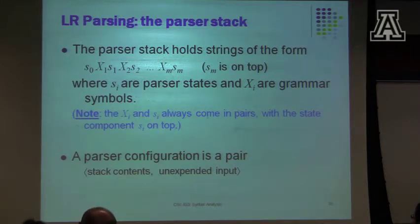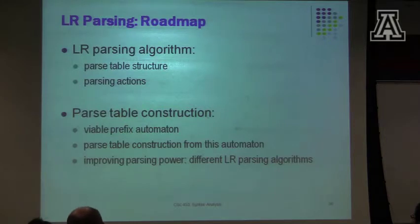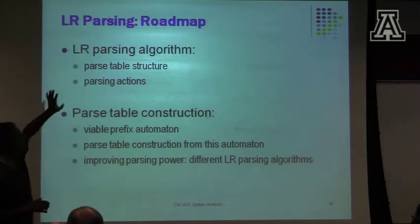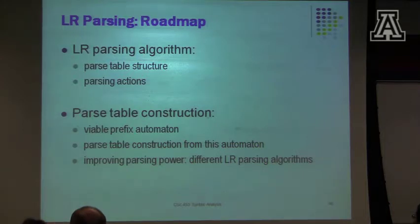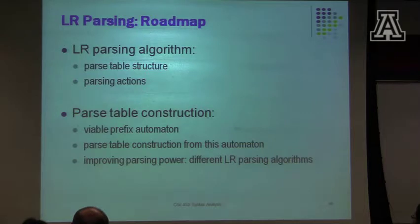The parser configuration consists of what's on the stack and what's in the input. The parse table has two parts: an action table and a go-to table. Each step begins with a consult of the action table. What the action table tells the parser is whether to shift or reduce — analogous to the transition function of a finite automaton, except now we also have a stack. We'll construct a little automaton, massage it, and from that automaton construct our table.